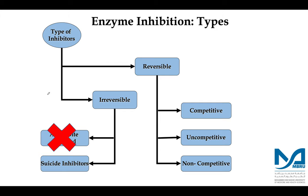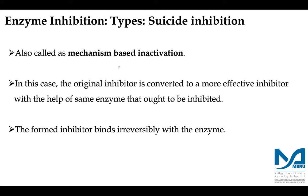The drug irreversibly binds to the active site of the enzyme aldehyde dehydrogenase. Since it binds to the active site irreversibly, the mechanism of inhibition is active site directed irreversible inhibition. We have now looked at both examples of active site directed irreversible inhibition and we move to the second type of irreversible inhibitors: suicide inhibitors.